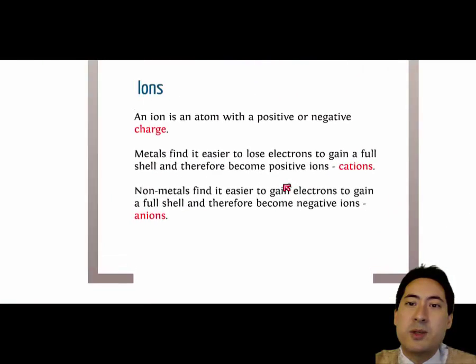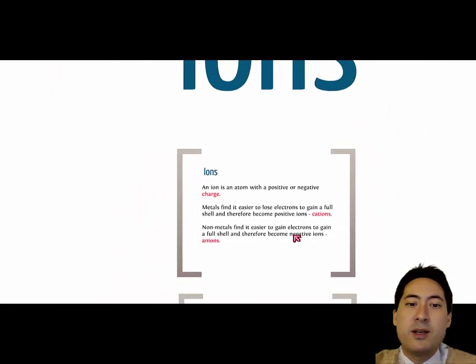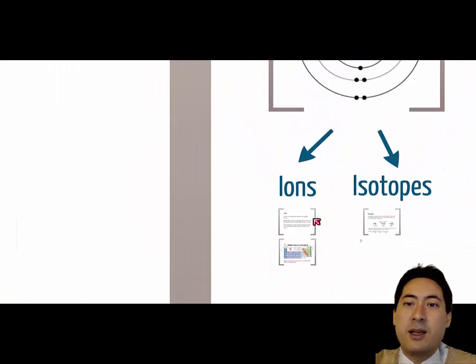So just a terminology. Again, the ions are an atom with a positive or negative charge. Those positive ions are called cations and the negative ions are called anions.